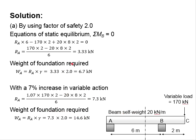From the comparison here, you realize that a 7% increase in terms of variable actions will lead to a significant increase in terms of the weight required for the foundation. This is mainly due to the effect of the long lever arm between the variable actions and the reaction at A.